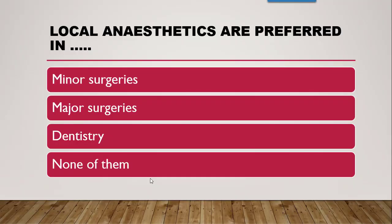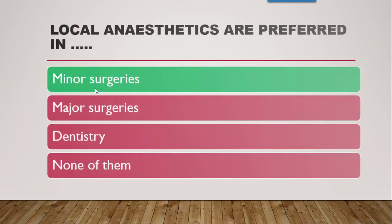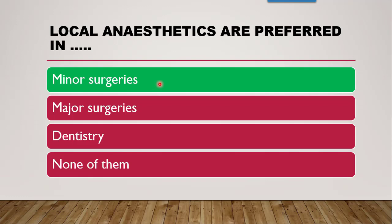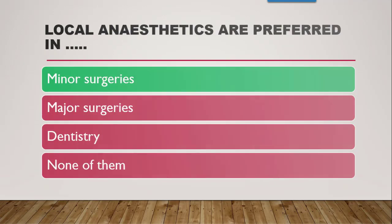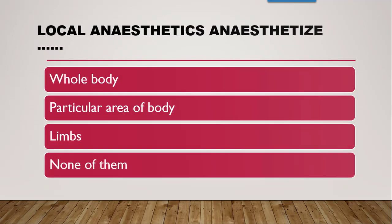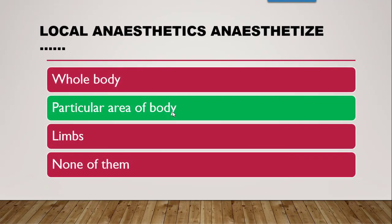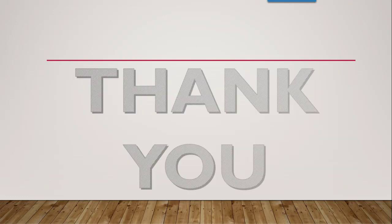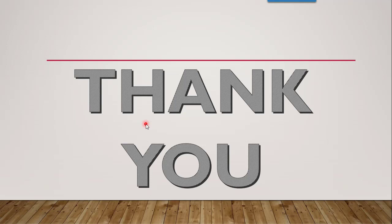Next question: local anaesthetics are preferred in minor surgeries, major surgeries, or dentistries? The correct answer is minor surgeries, because they are restricted to a particular area. Major surgeries require CNS depression. Final question: local anaesthetics anaesthetize the whole body, a particular area, limbs, or none? The correct answer is a particular area of the body around which the local anaesthetic is administered.